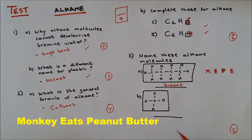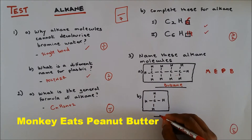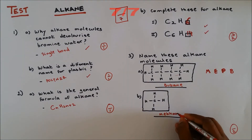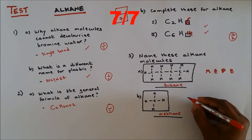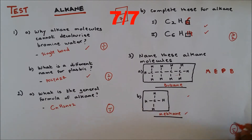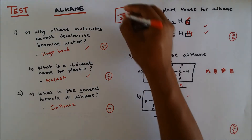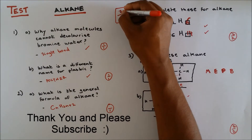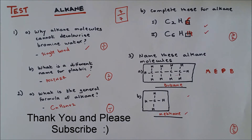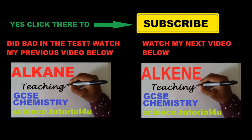For question 3b, this is one carbon, so it is methane. That's two out of two. Everything adds up to seven. If you got seven out of seven, well done! I'll see you in my next video, thank you.